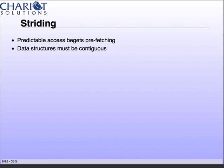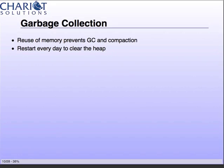Striding — when your application is running and pulling data into caches, there are things the hardware can do for you too. If you organize your data a certain way, it can prefetch data into caches because it knows you're going through a sequential axis of memory as you iterate over a list. It's going to say, 'I can get that next thing because I know that's what's next' — and it's already in your caches, paying no penalty for that read. So you want to take advantage of striding as much as possible, which means your data structures have to be contiguous in memory.